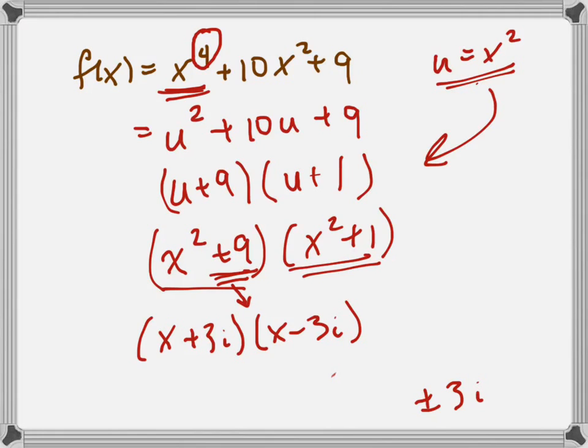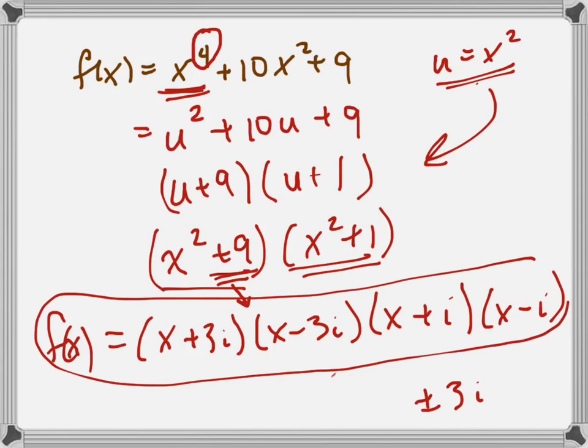And this one, similarly, is going to be what? Plus or minus i. x plus i and x minus i, exactly. So there's f of x written as a product of linear factors right there.